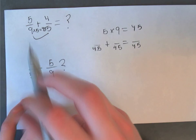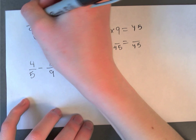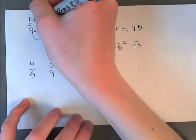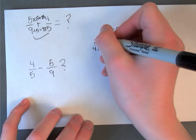So whatever we do to the bottom we got to do to the top. So we did times five that equals 25. So for our first one that would be 25 over 45.